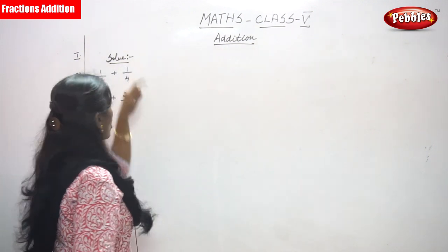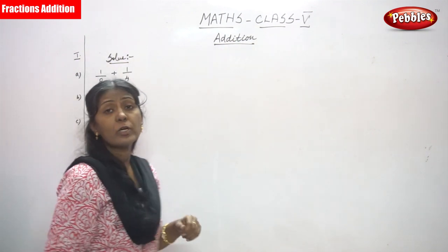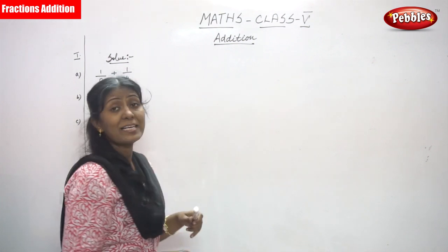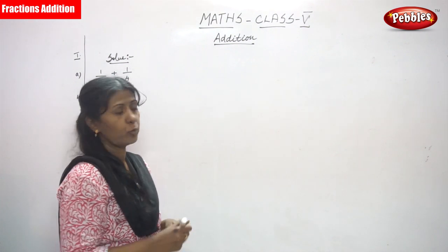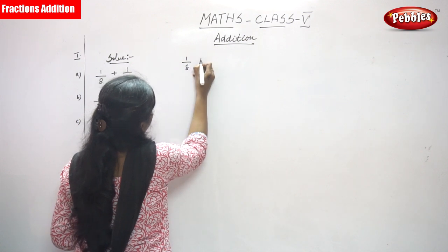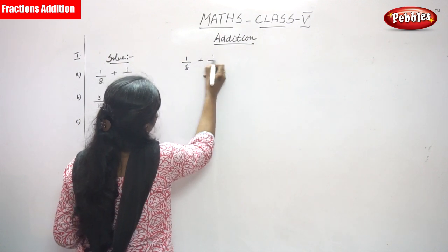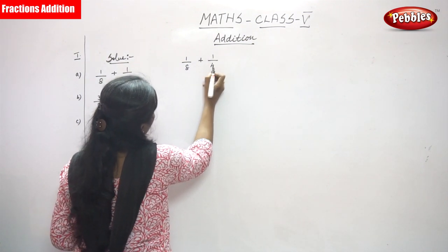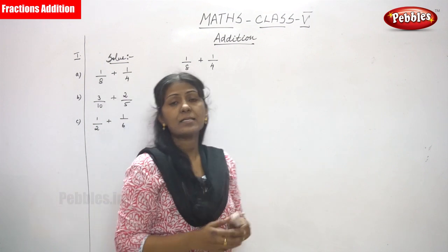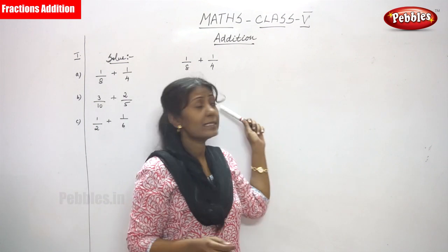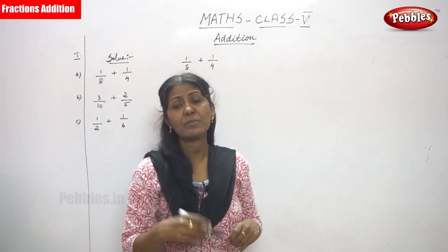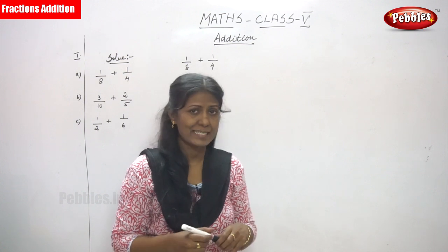The first sum to solve is 1 by 8 plus 1 by 4. Look at the denominators — these are different denominators, so you have to take LCM.